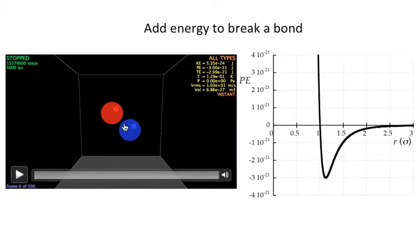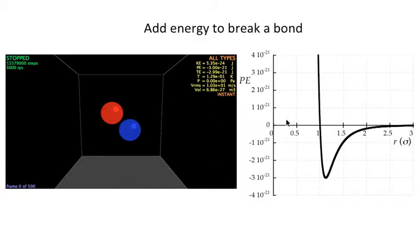So the blue and red atoms here in this simulation use this potential energy function, the Lennard-Jones potential energy function, with a well depth. It's the depth of this well here of minus 3 times 10 to the minus 21. So the bottom of this is minus 3 times 10 to the minus 21.